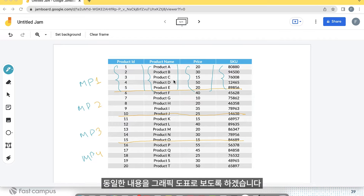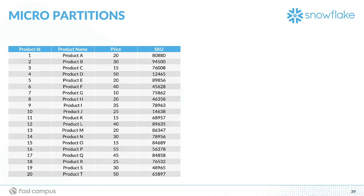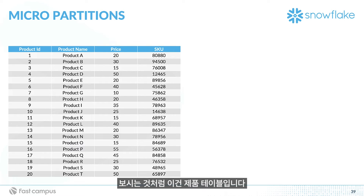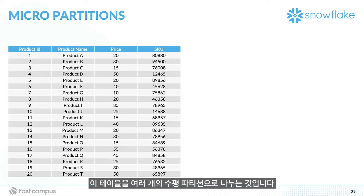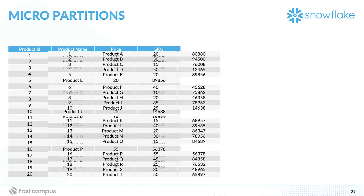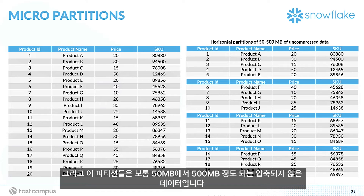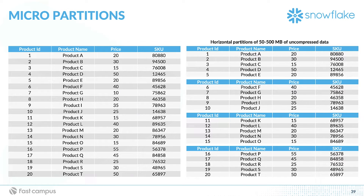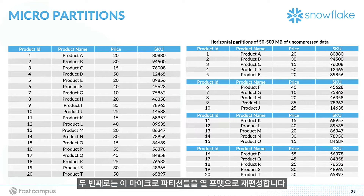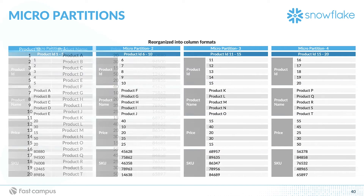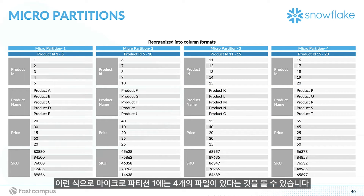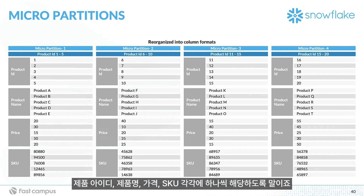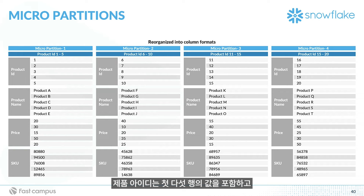Let's see this same thing in a graphical diagram. As we see, this is the product table. The first thing Snowflake does is divide this table into multiple horizontal partitions, which are usually 50 to 500 MB of uncompressed data. It then reorganizes each micropartition into columnar format. Micropartition 1 has 4 files — one for product ID, product name, price, and SKU — each containing the values for the first 5 rows.